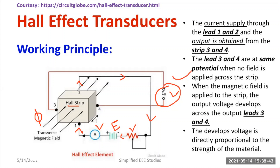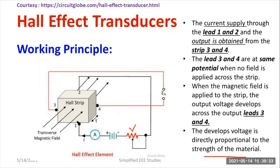Terminals 3 and 4 are at the same potential when no magnetic field is applied across the strip. When the transverse magnetic field is applied to the strip, the output voltage develops across lead 3 and 4. The developed voltage is directly proportional to the strength of the magnetic field. This is how the Hall effect transducer operates — we require a Hall strip, a continuous current supply, and a terminal to measure the Hall voltage.